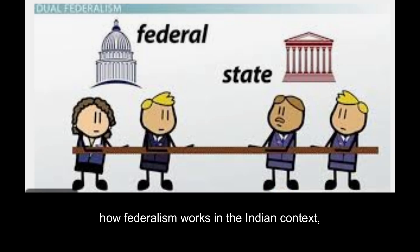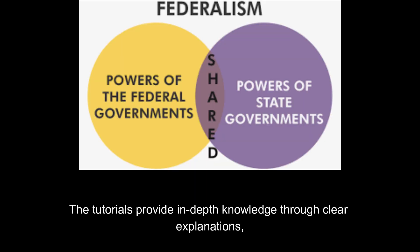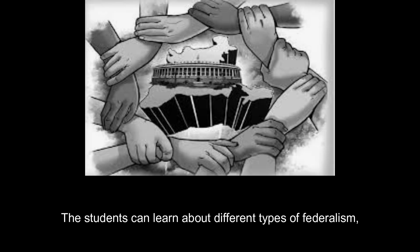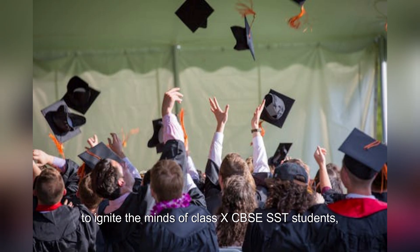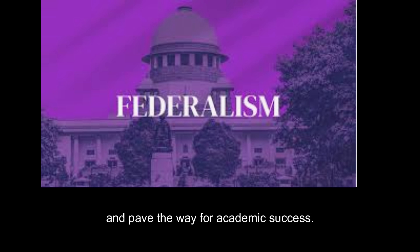The videos shed light on how federalism works in the Indian context, highlighting the roles and responsibilities of the central government and the state governments. The tutorials provide in-depth knowledge through clear explanations, diagrams, and examples. Students can learn about different types of federalism, such as dual federalism and cooperative federalism, and explore challenges and debates such as taxation and resource sharing. Ignited Minds Tutorials aims to ignite the minds of Class X CBSE SST students, helping them grasp the intricacies of federalism through engaging and informative content, enhancing their understanding and paving the way for academic success.